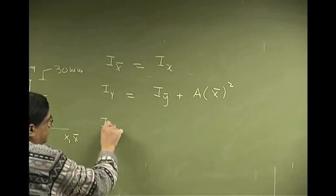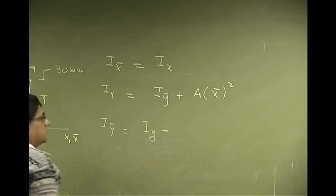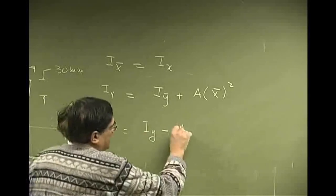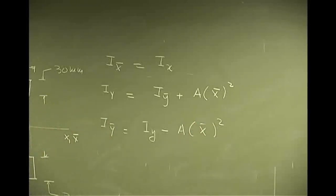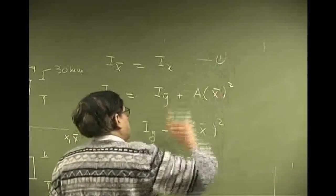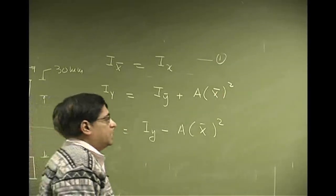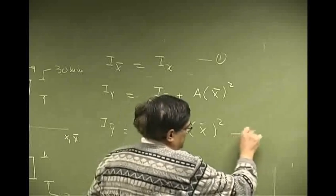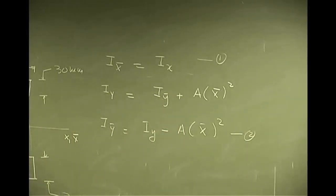So your i-y-bar will be i-y minus a-x-bar squared. So that is going to be the equation number 1, which gives us i-x-bar. That is going to be the equation number 2, which gives us the i-y-bar.